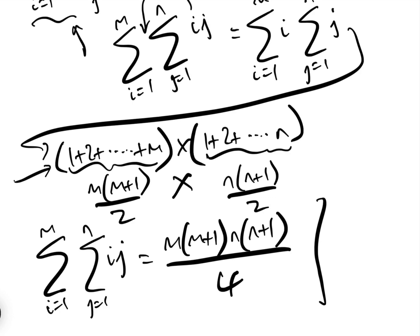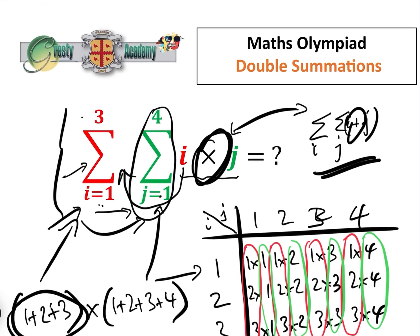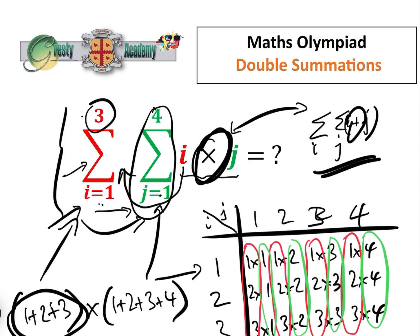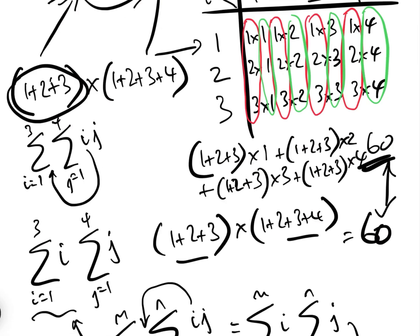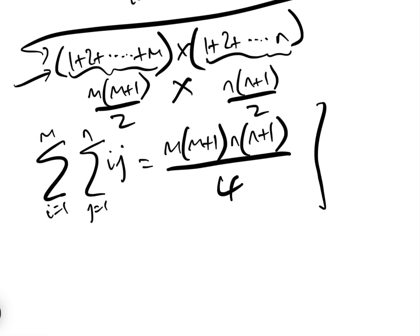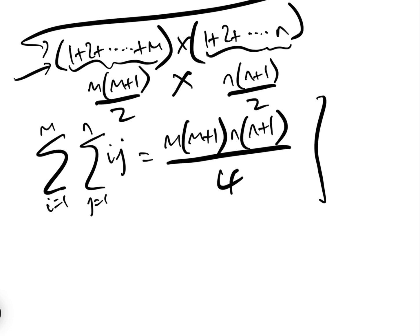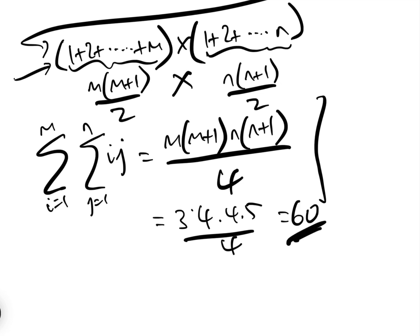Let's verify with our original question where m=3 and n=4. Substituting in: 3×4 × 4×5 over 4, which equals 60. The formula is correct.